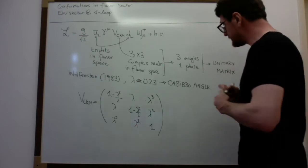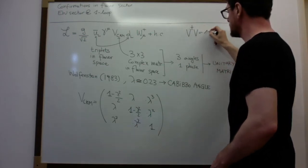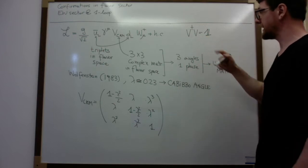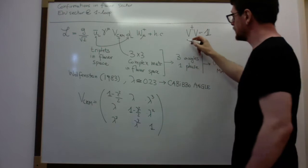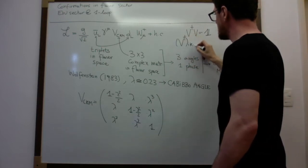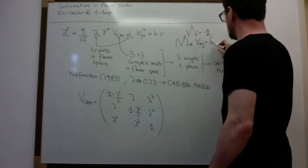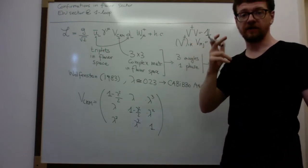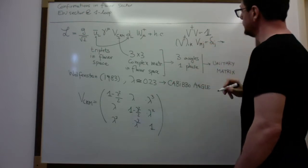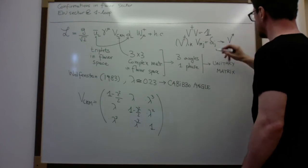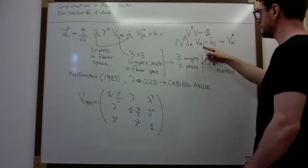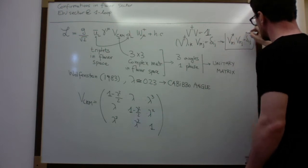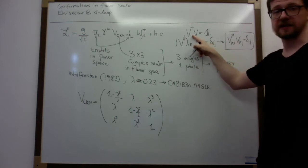Since it must be unitary, this means that V-dagger times V must equal the identity. So let's open up the components of this expression. This is V-dagger_{ik} V_{kj} equal to delta_{ij}. Remember that the dagger of a matrix is the transpose of the complex conjugate. So this condition is actually equal to V-star_{ki} times V_{kj} summed over k, and this must equal delta_{ij}.